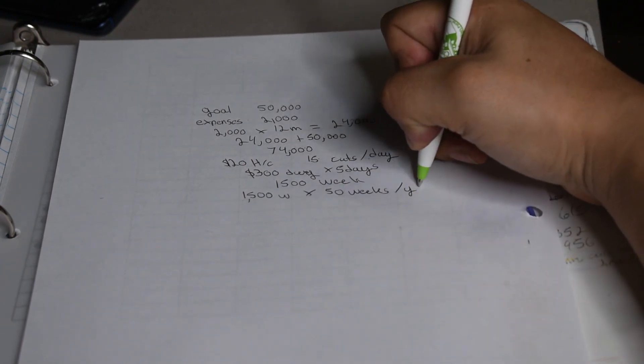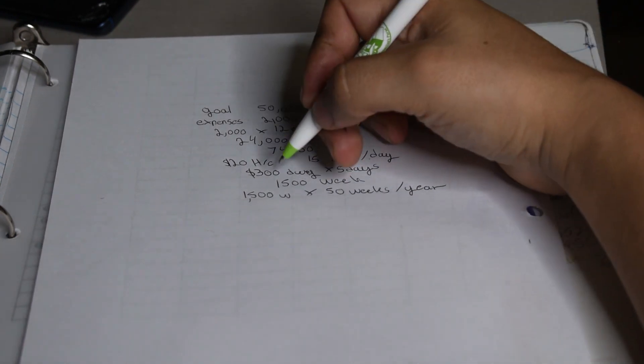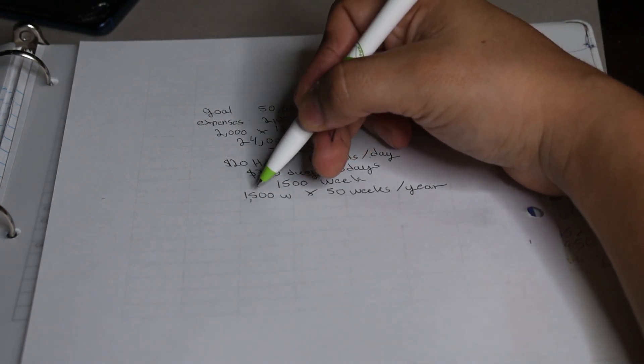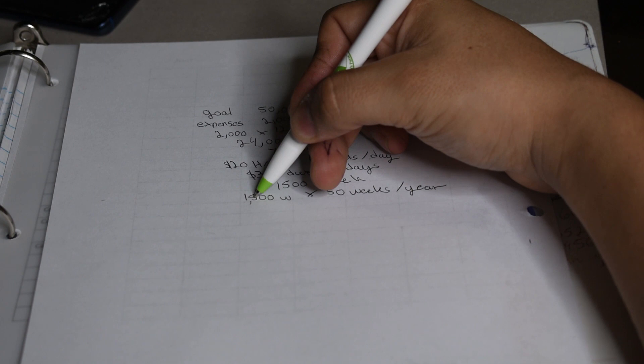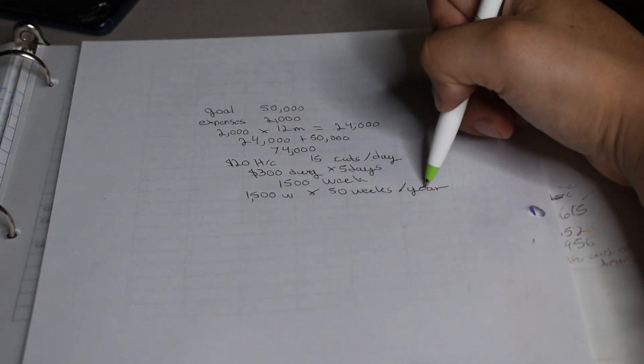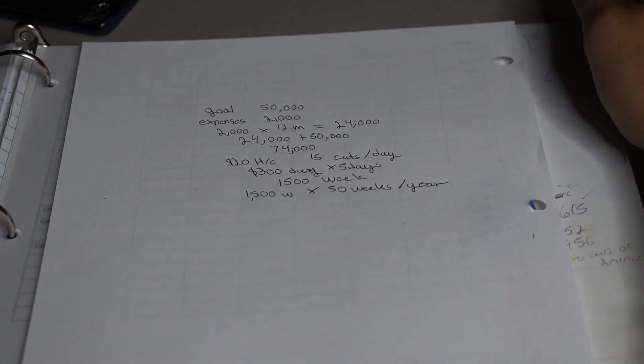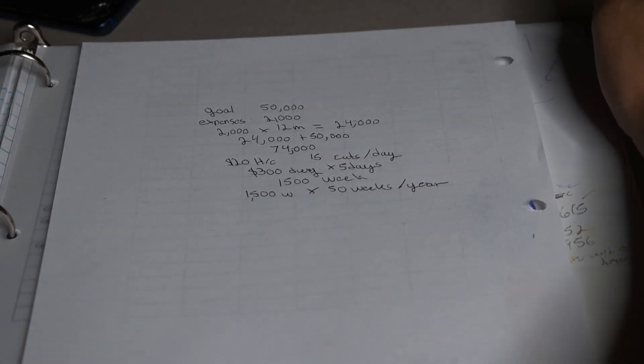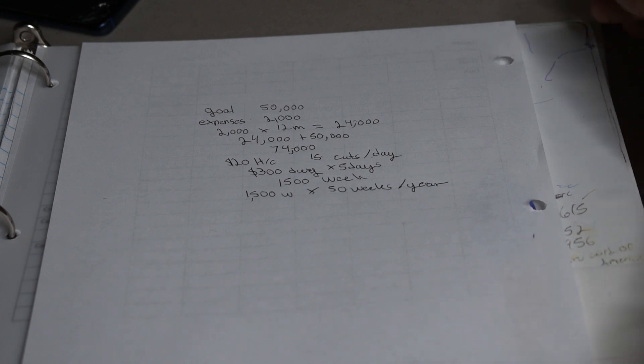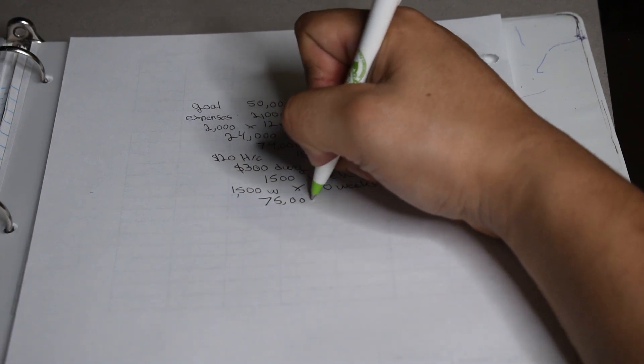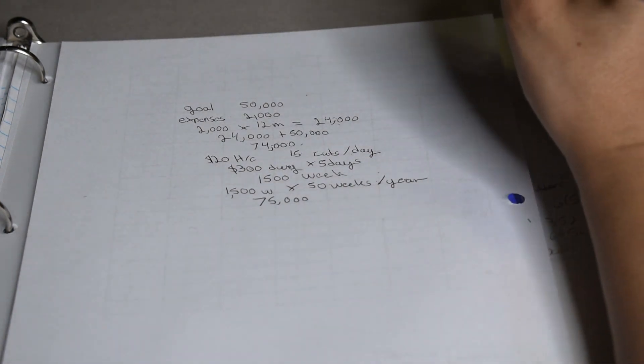Well, the reason why we're only doing 50 weeks is because you got to keep in mind, we all like to take vacation. We all have holidays we want to take. We have birthdays. We have sick days. We have to account for those days that we're going to be missing. So I'm going to go ahead and give you two weeks of vacation. So that's why I said 50 weeks. So 1,500 times 50 weeks a year that you work. That should give us a total of $75,000. So not only did we meet our goal, but we went beyond that.